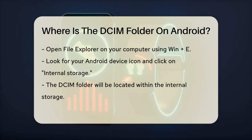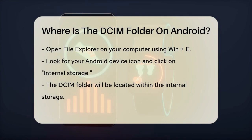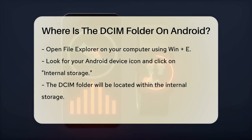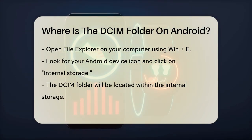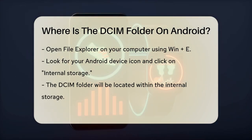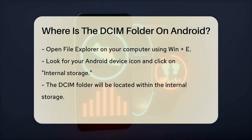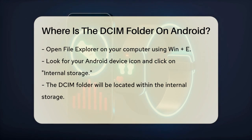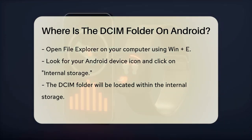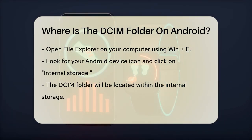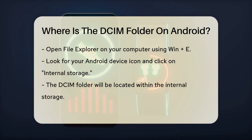On your computer, press Win+E to open File Explorer. Look for the Android device icon on the left panel, then click on Internal Storage. Inside the Internal Storage, you'll see the DCIM folder.